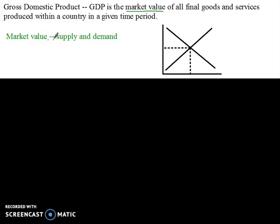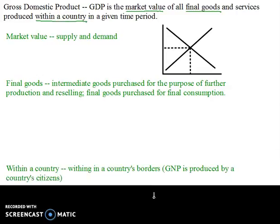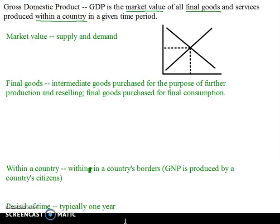That gives you the market value of all the final goods and services. It can't be intermediate goods — it has to be final goods, as we discussed in a previous podcast. The goods and services must be produced within a country's borders, and the typical time period we use is one year. So the market value of all final goods and services produced within a country in a one-year time period — that's our definition of gross domestic product.